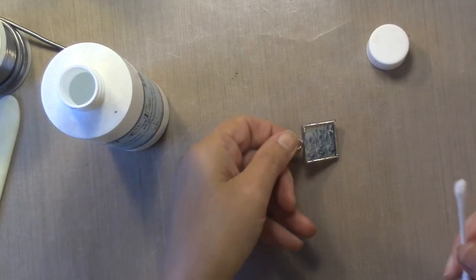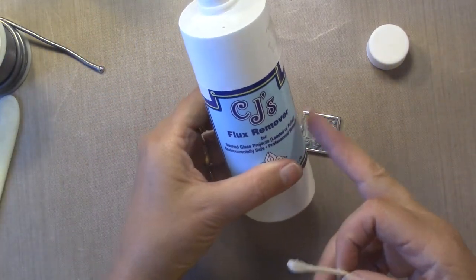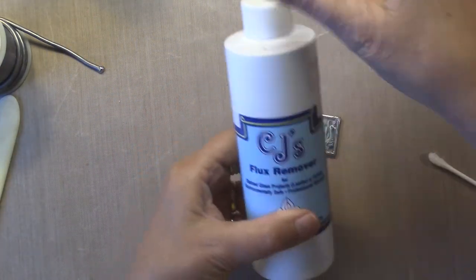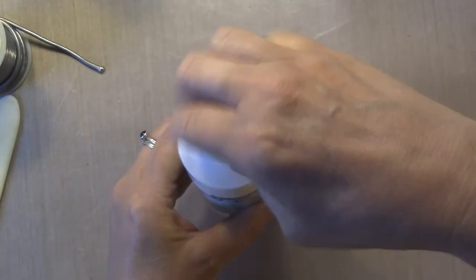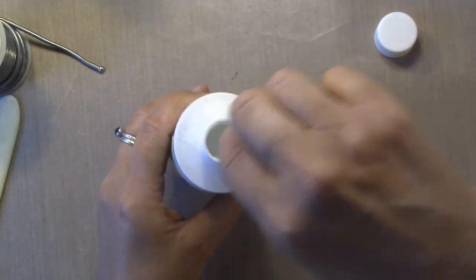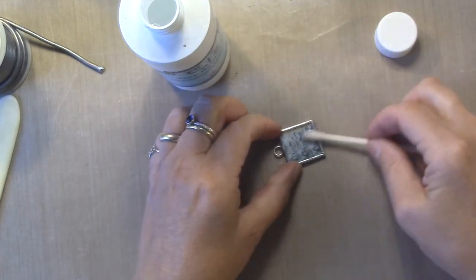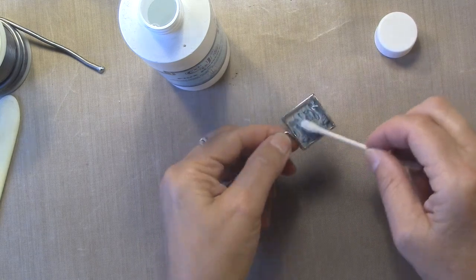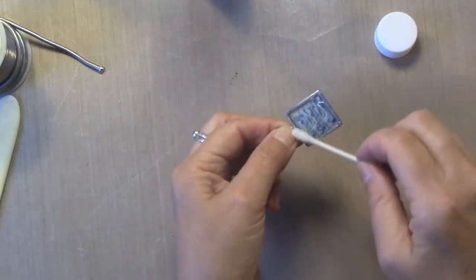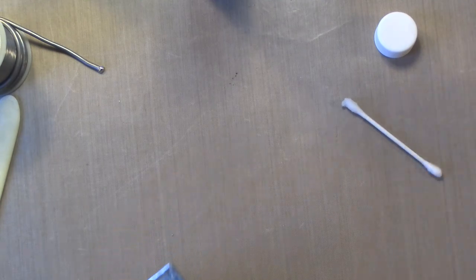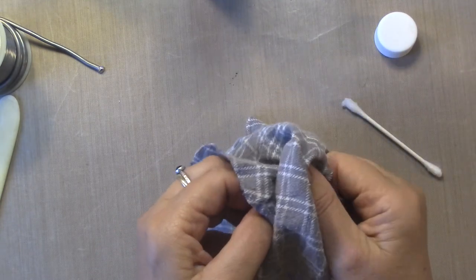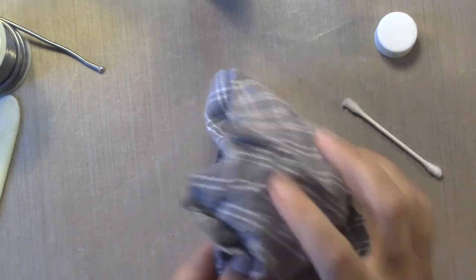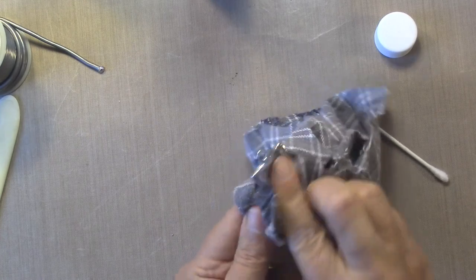Okay, so now we're back and we're ready to clean our pendant. I've got some flux remover and a Q-tip and I'm just going to go around and wipe the whole pendant down. Then I'm going to use a soft cloth and just clean it off.